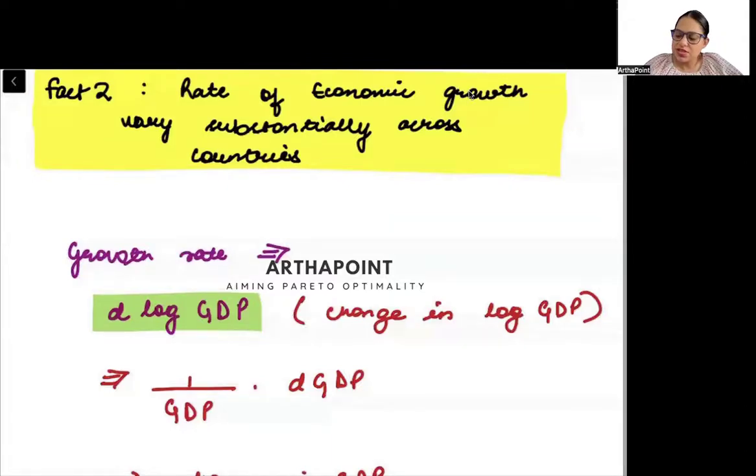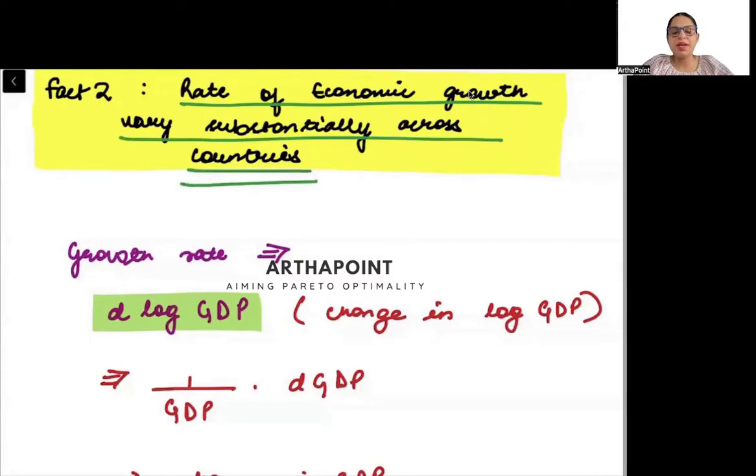Let's now talk about the second important fact related to growth, which says that the rate of economic growth varies substantially across countries. If we look at the rate of economic growth, not only the rate actually, even if we look into the process of their economic growth, that also varies across countries.